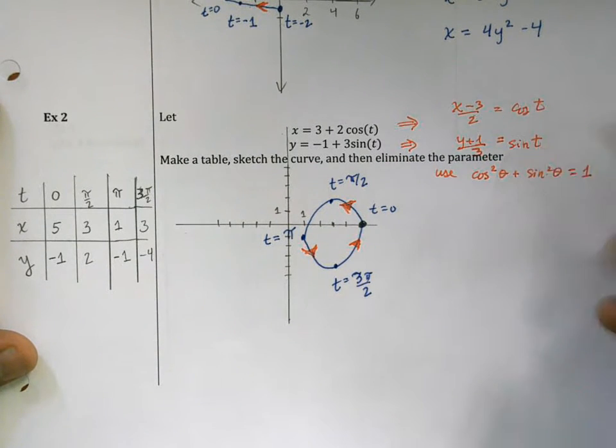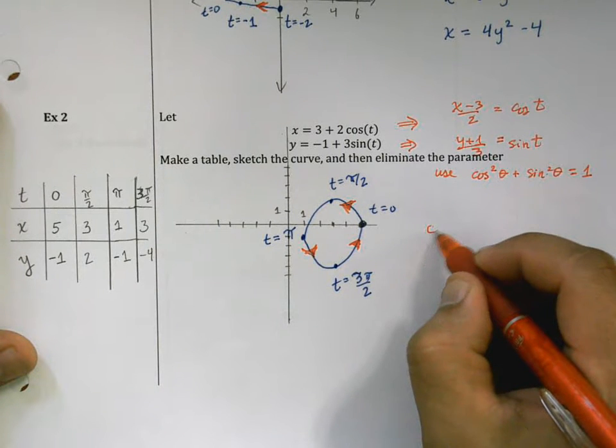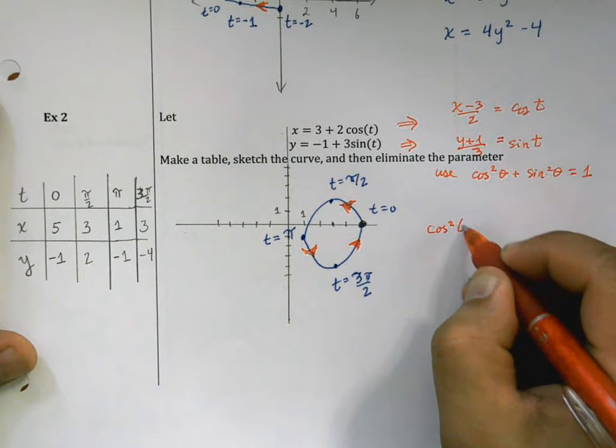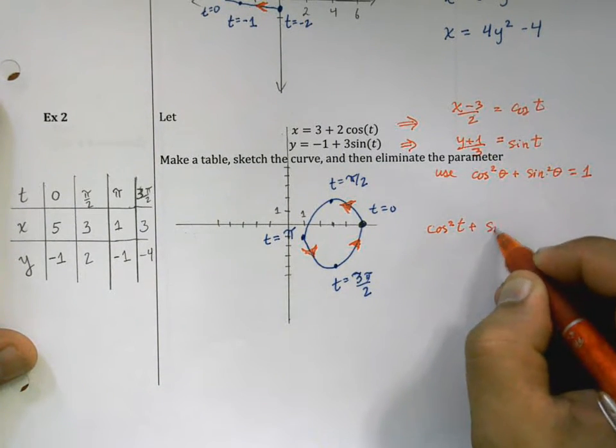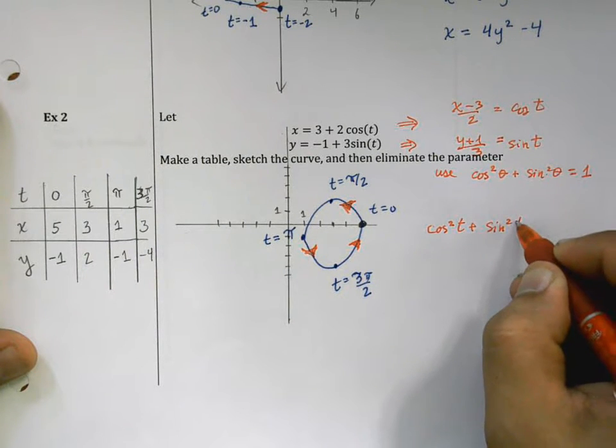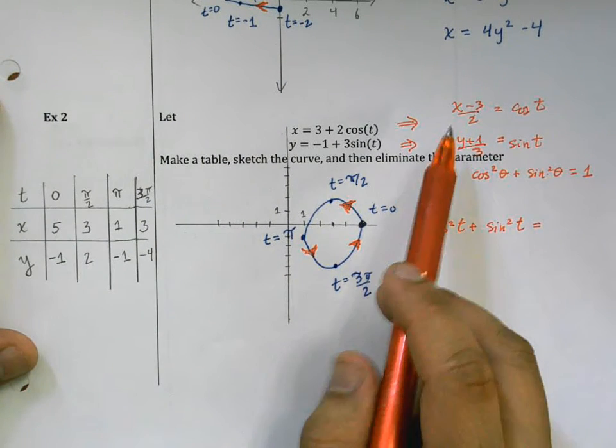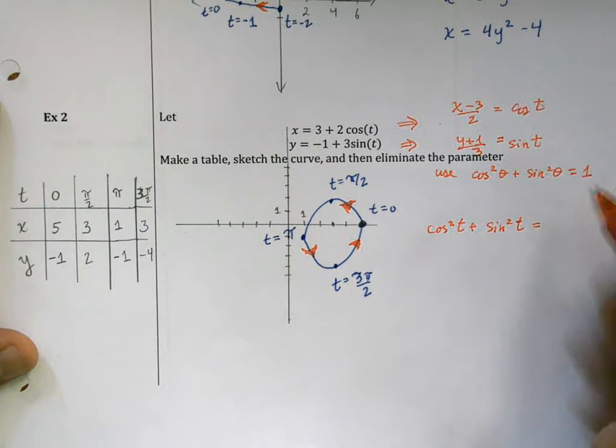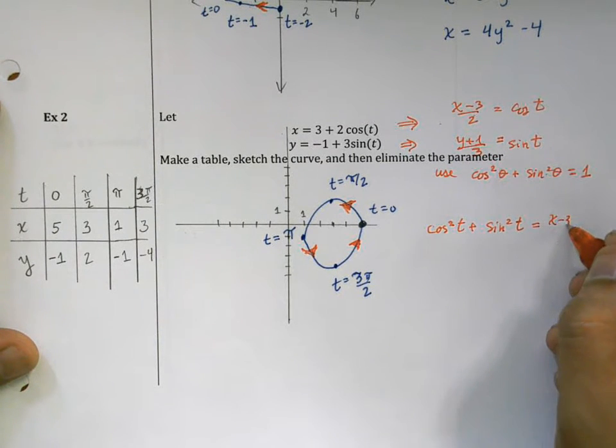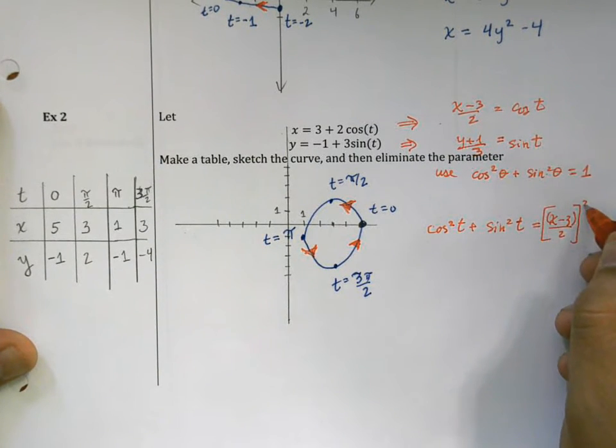Now if I take each of these and square them and add them together, I know that cosine squared t plus sine squared t must be equal to this quantity squared: (x - 3)/2 quantity squared.